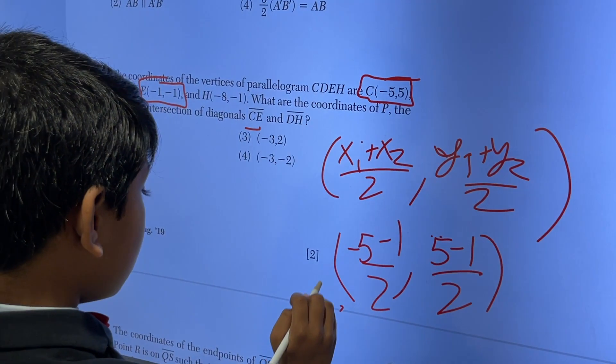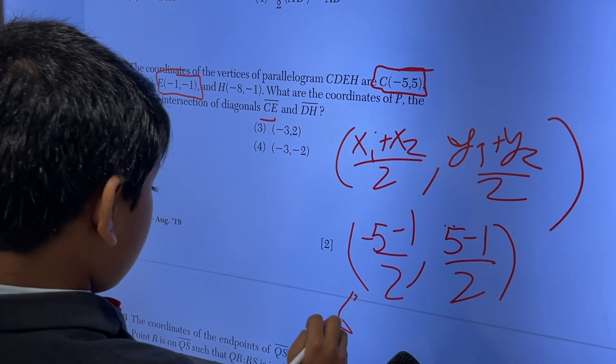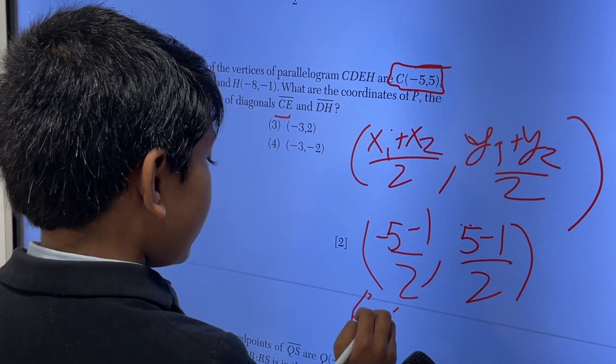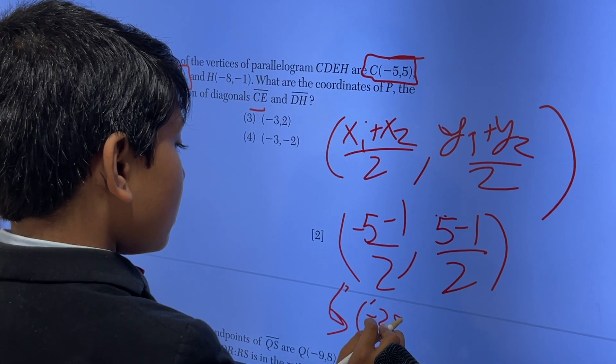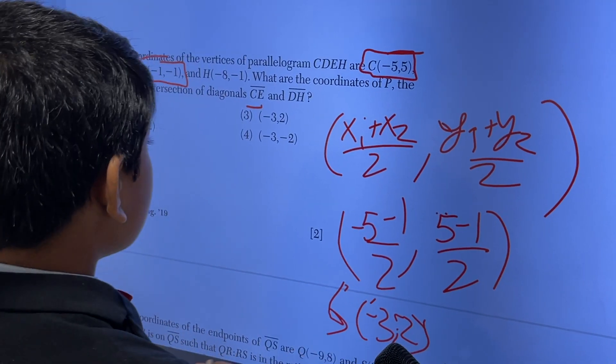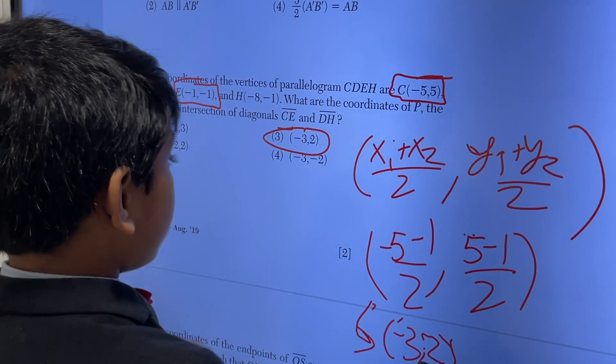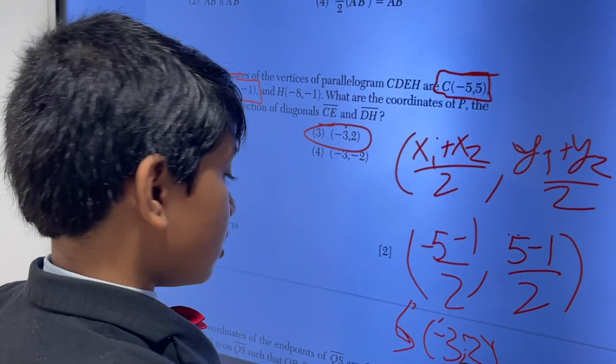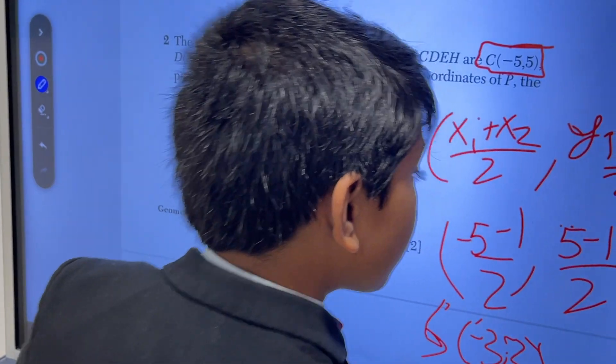So that gives us... what? Oh, okay. Negative 6 over 2, which is negative 3, comma 4 over 2, which is 2. So negative 3, 2 is the correct answer. Alright, move on to the next one.